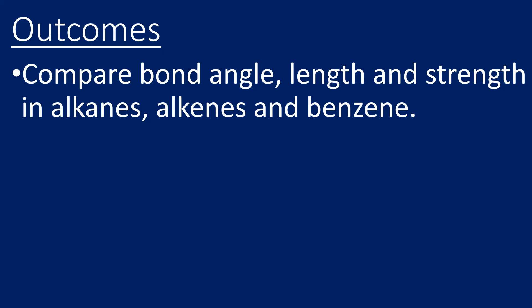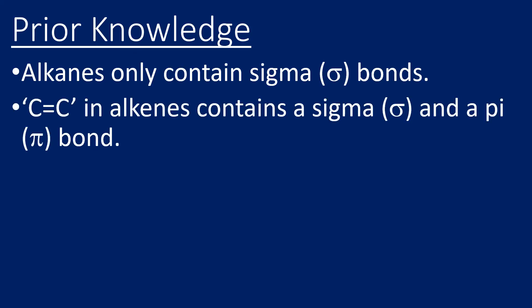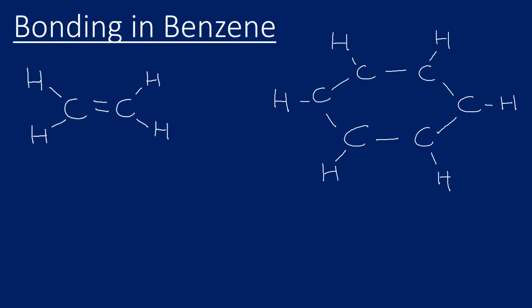So we're going to look at the angles, lengths, and strengths of bonds in alkanes, alkenes, and benzene. In terms of prior knowledge, it is worth knowing about sigma and pi bonds before you get to this point — being aware that alkanes will only contain sigma covalent bonds, whereas the double bond in an alkene is in fact a sigma bond and a pi bond. I do have a video on sigma and pi bonds and hybridization, and I will put a link in the description below.